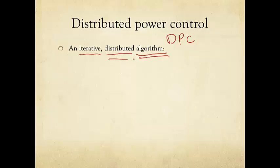It is distributed. This is actually a very fuzzy word; it's hard to exactly pin down its definition. We're going to see a very distributed solution today, and later in the course many other variants. But roughly speaking, distributed means that the network elements — in this case the transmitters and receivers — do not need to talk to each other too much with explicit message passing.